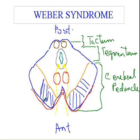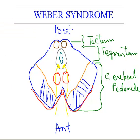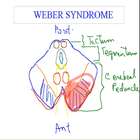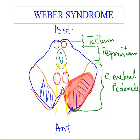Now let's say that this person has a stroke affecting one of the perforating branches of the posterior cerebral artery. If there is a stroke that affects this area here — let's say this is the area that has the stroke — what structures will be involved? The third nerve is here, so you have the third nerve involved, which would give an ipsilateral third nerve palsy.